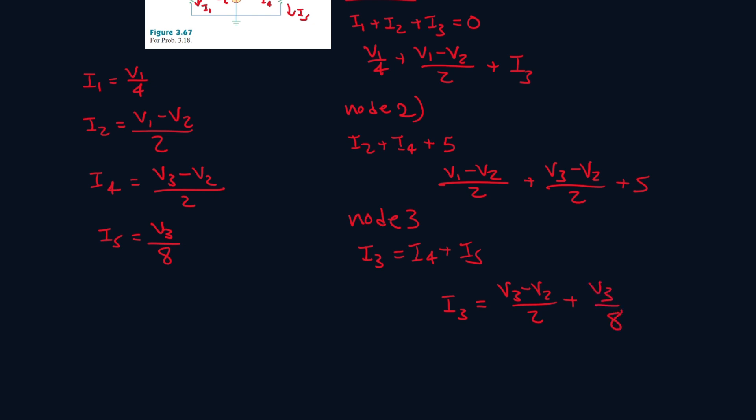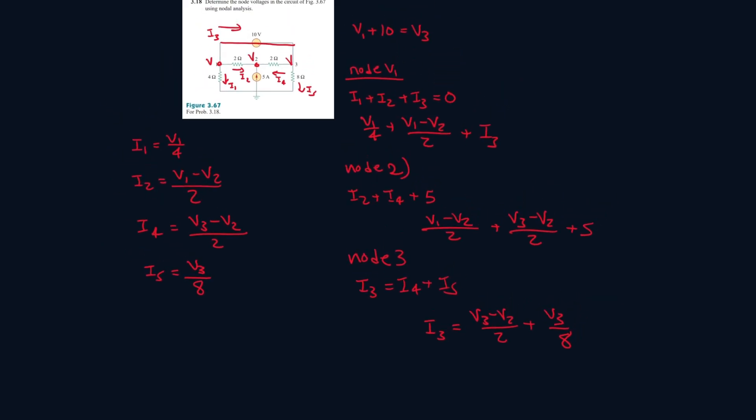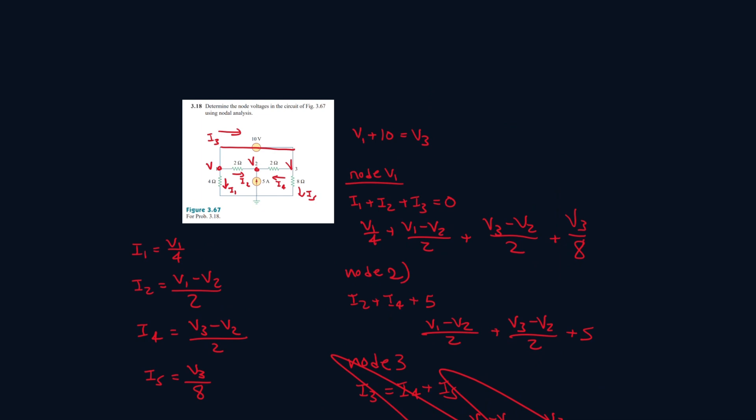Take a look at what we got. We have 4 unknowns and 4 equations including this one. We can plug in this I3 into here and create one long equation. So this one will be V3 minus V2 all over 2 plus V3 over 8. Now let's just fully ignore this equation, and now we have these three equations we can work with.